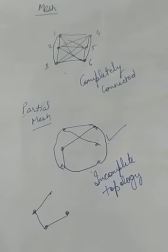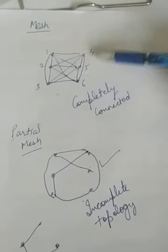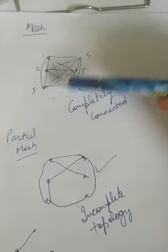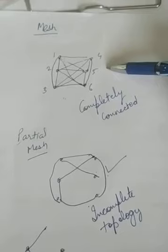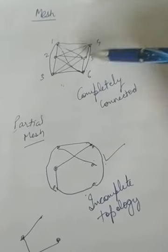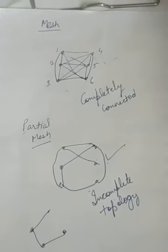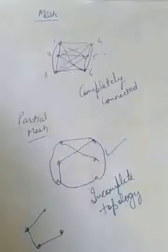diagram. So here you can see mesh topology - completely connected. So many wires are used. Only six computers are there, but in reality, 60, 600, so many computers can be there. So you can imagine the number of wires becomes very high. So this is mesh and this is partial mesh.